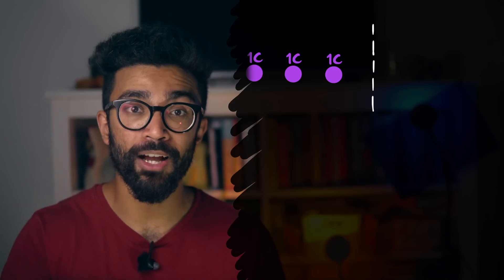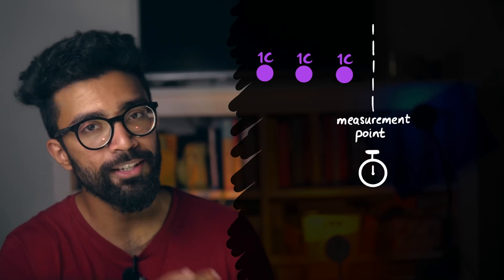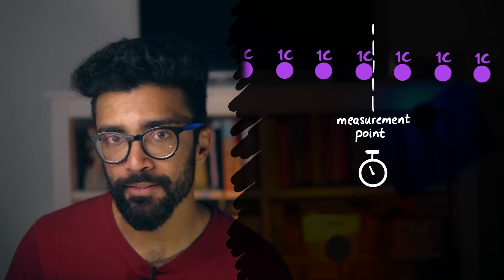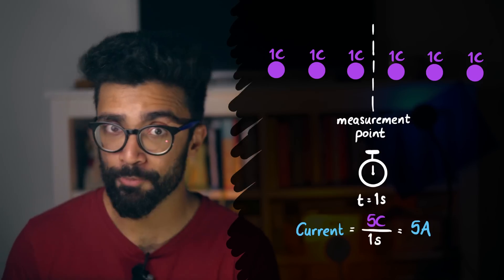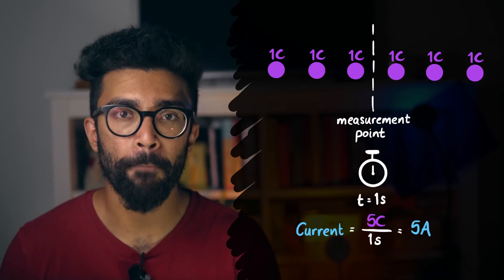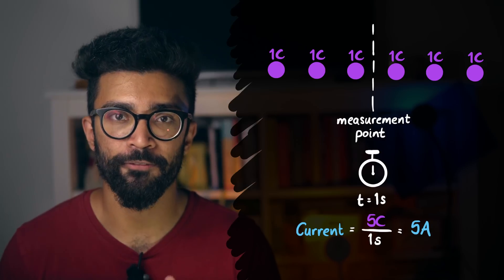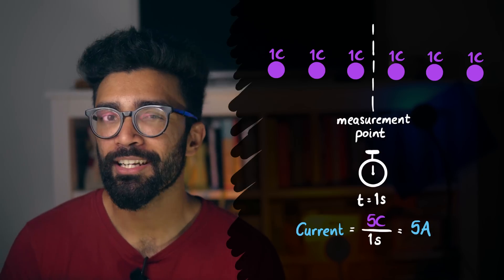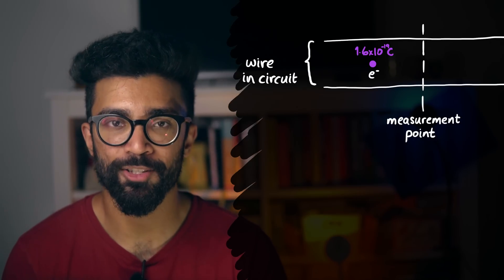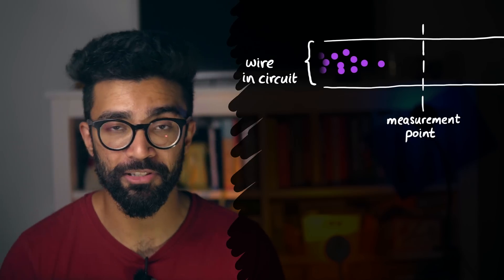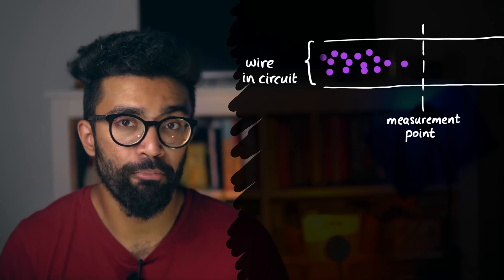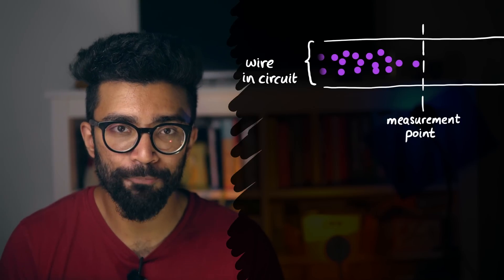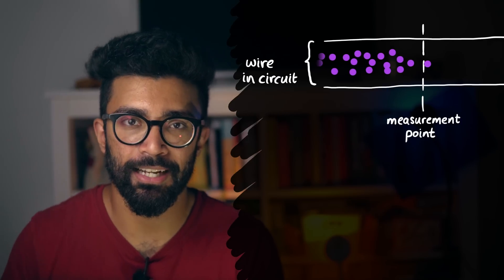If, within our circuit, we had five of these particles passing this point here every second, then the current at this point in the circuit would be five times one coulomb, or five coulombs per second, which is equivalent to five amps. Now in reality, each electron has a much smaller charge, and there are many more than five electrons passing a point per unit time in a circuit. Partly because there are many electrons along the width of a wire, but the principle here is exactly the same.